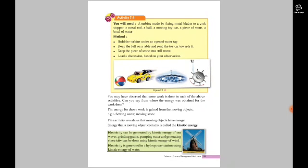When an object is moving, it contains kinetic energy. Electricity can be generated by kinetic energy of sea waves. Grinding grains, pumping water, and generating electricity can be done using kinetic energy of wind. Electricity is generated in a hydropower station using kinetic energy of water. Kinetic energy is the thing we use to produce electricity because the dynamo needs to rotate.